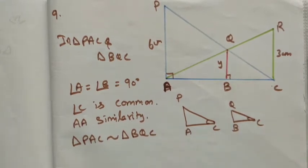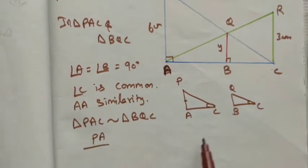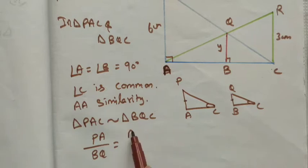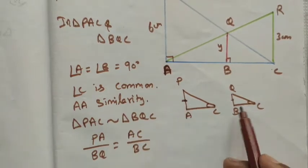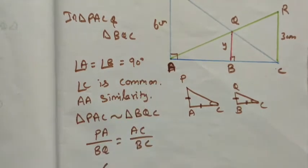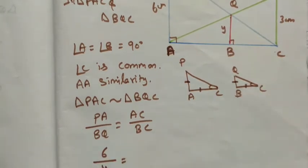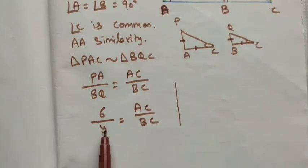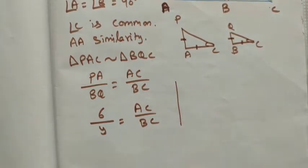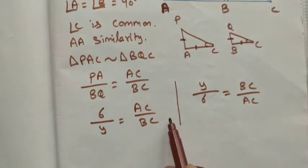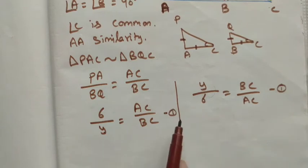Now we can write the formula. PA divided by BQ equals AC divided by BC, since the base sides are proportional. PA is given as 6 centimeters, BQ is y. AC and BC are unknown. We can reciprocal the terms: y divided by 6 equals BC divided by AC. This is Equation 1.